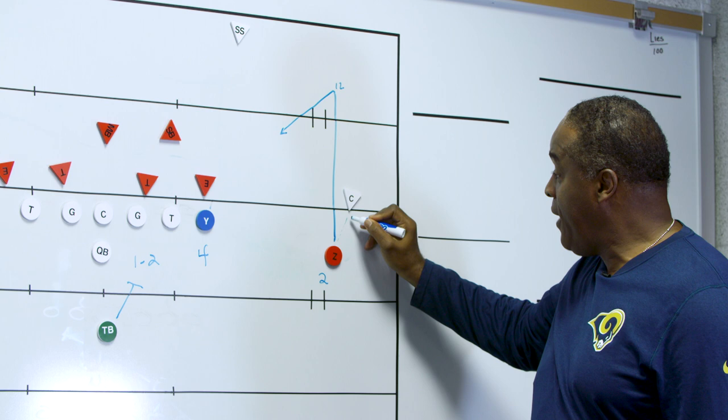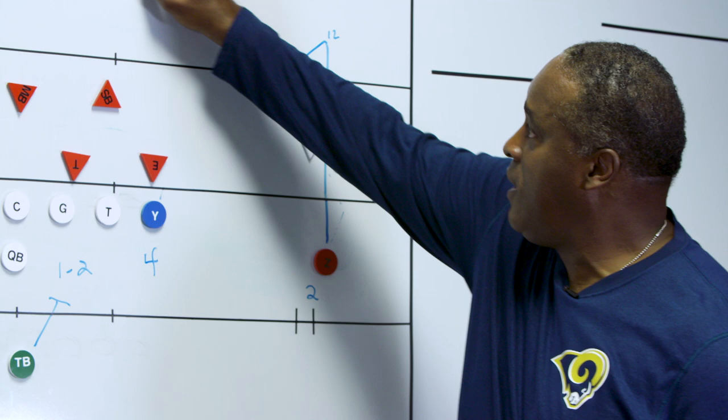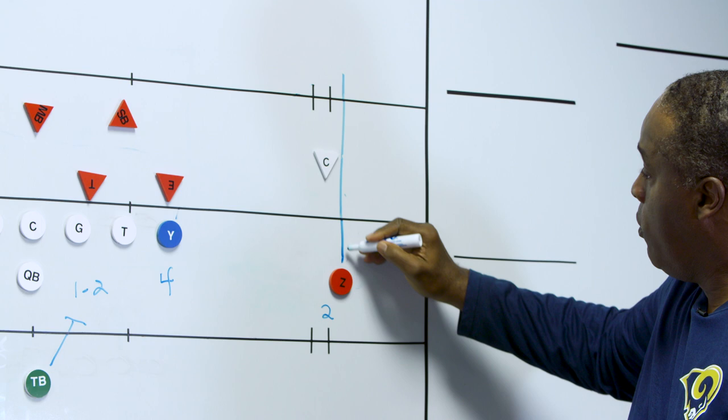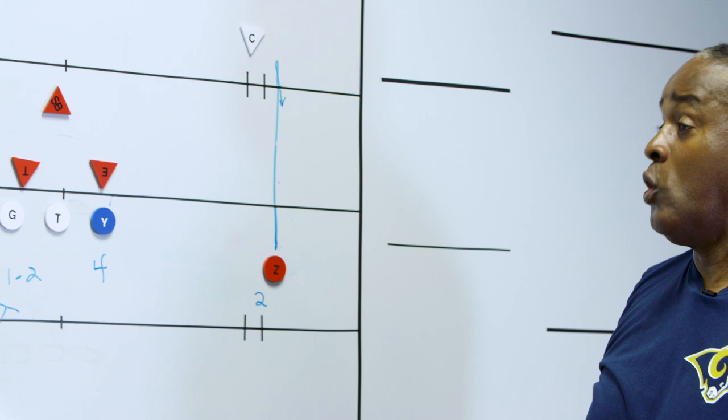If it's man coverage and that corner is playing the inside technique, what Jerry — the receiver — would do is push straight up the field knowing the corner is inside, then plant at depth and come right back down the stem. The quarterback saw it, the receiver had to see it, and the ball is going to be thrown to the outside shoulder off the technique of the corner.